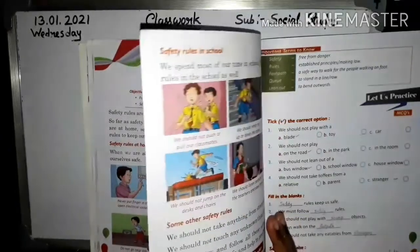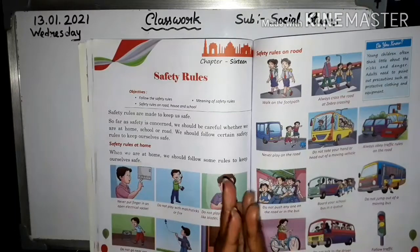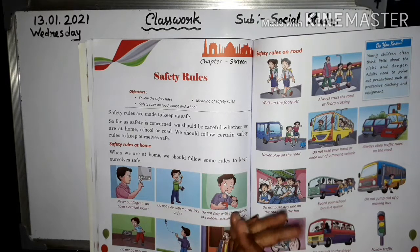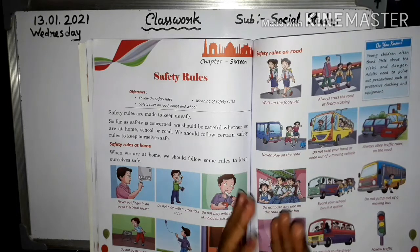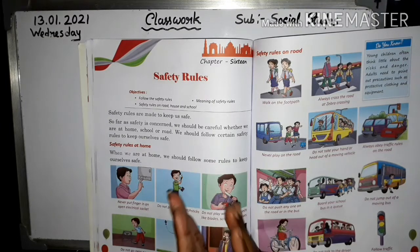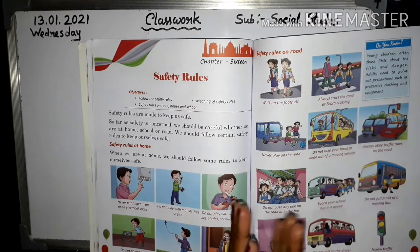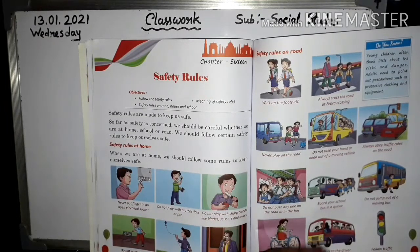Safety means free of danger, and rules means making law — जो सबको मानके चलना है, छोटा बड़ा सब को। Safety rules are made to keep us safe. We should be careful whether we are at home, school, or abroad. We should follow certain safety rules to keep ourselves safe — at home, on road, at school.